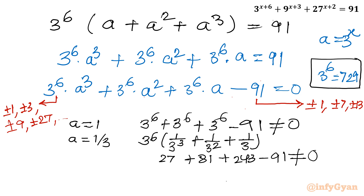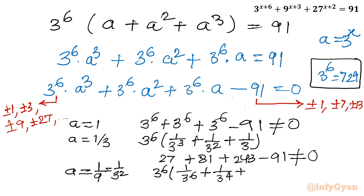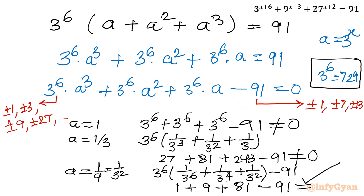Now let me put a = 1/9, that is 1/3^2. Taking 3^6 as common: a^3 = 1/3^6, a^2 = 1/3^4, a = 1/3^2. Multiplying: 1 + 3^2 + 3^4 = 1 + 9 + 81 = 91. So 91 − 91 = 0. Yes, this value is true! So a = 1/9 = 1/3^2 is our base solution to this cubic equation.